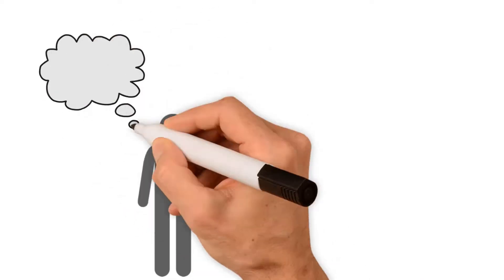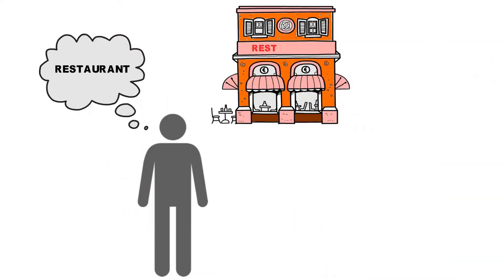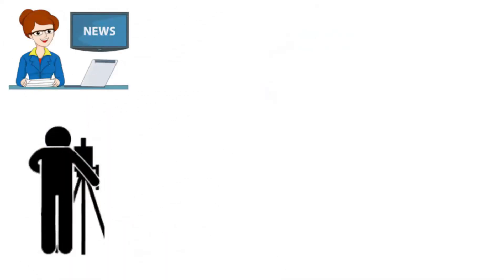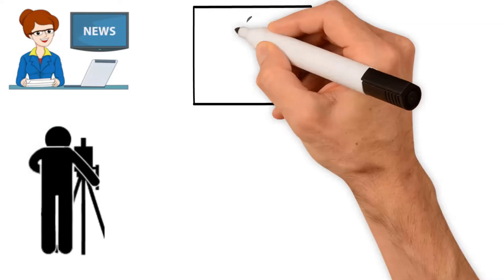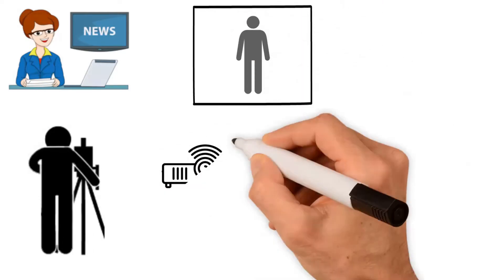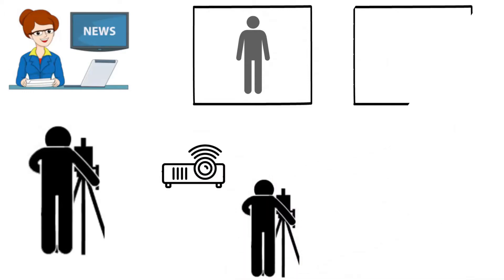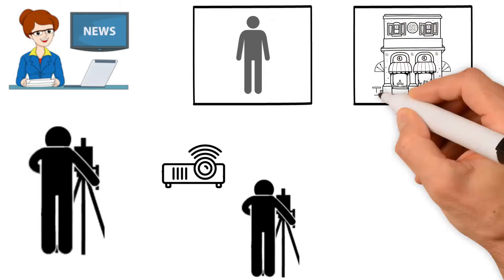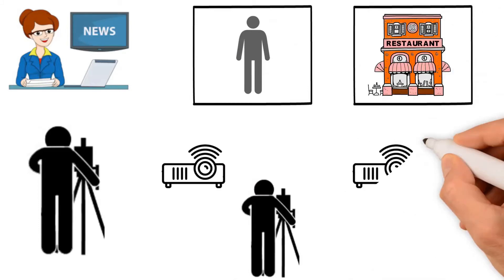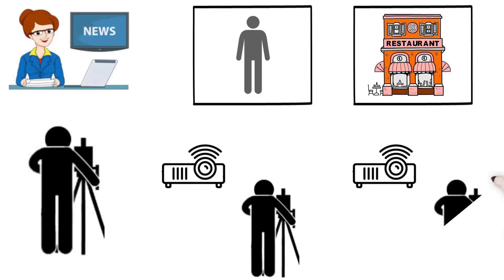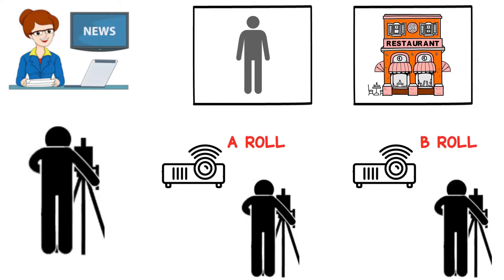To make interviews more interesting, the news anchors wanted to cut away. The news crew projected the interview of the restaurant owner on a screen using the first projector and used a TV broadcasting camera to capture the interview. Then, when the restaurant owner started talking, the crew projected footage of the restaurant on a second screen using a second projector and used another TV broadcasting camera to capture footage of the restaurant, while keeping audio from the first film. The film on the first projector was called A-Roll and the second projector, B-Roll.